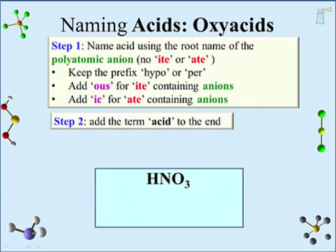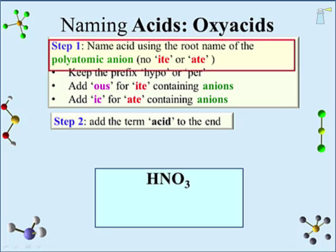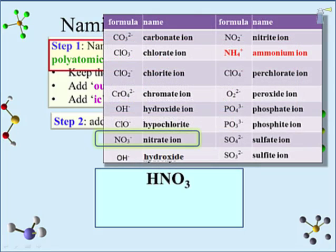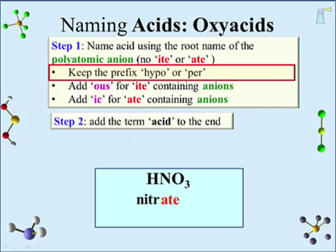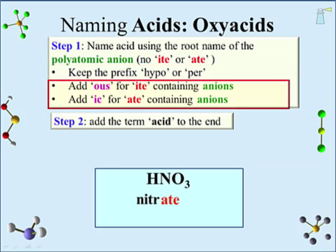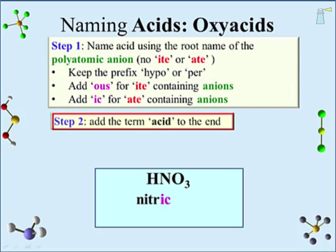For HNO₃: find the polyatomic anion NO₃⁻, which is nitrate. Remove the '-ate.' Nitrate has no prefix, so skip that step. Add '-ic' since '-ate' was removed, giving 'nitric.' Add 'acid.' HNO₃ is nitric acid.